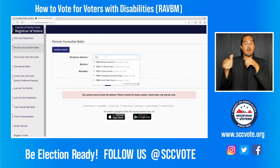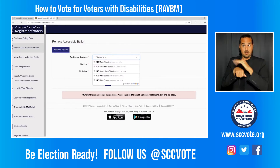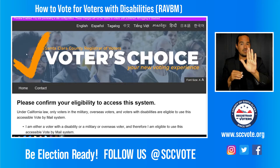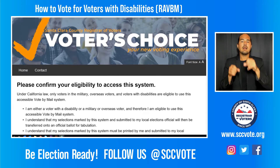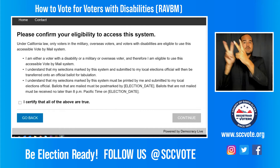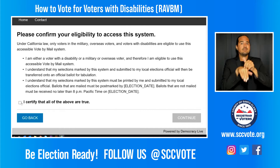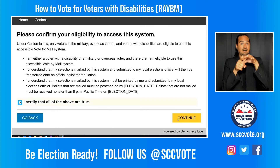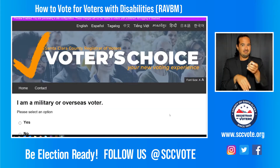Remote Access Vote-by-Mail voters are sent an email with a link to access their official ballot, along with instructions on how to download, print, complete, and return their ballot to the Registrar of Voters by Election Day.